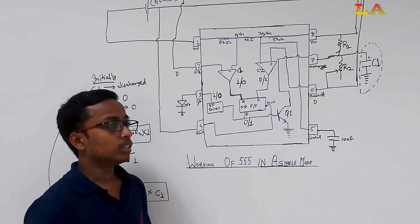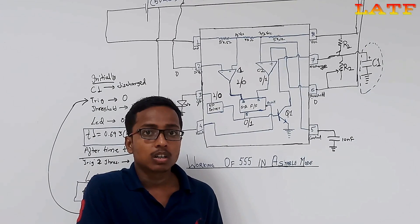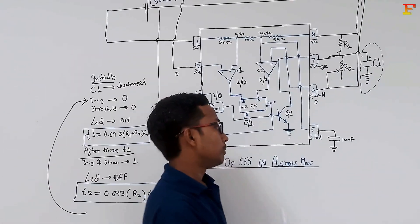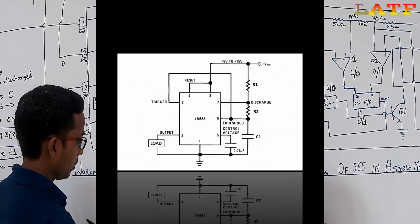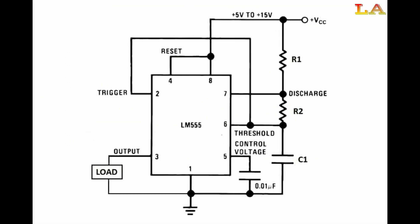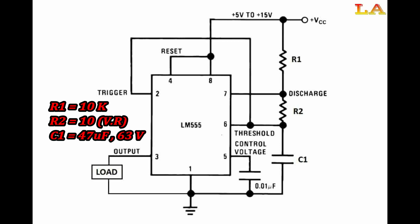Now, let us see the practical demonstration of 555 in astable mode. This is the circuit diagram of 555 in astable multivibrator mode. Here, R1 is equal to 10 kOhm, R2 is variable resistor of 10 kOhm, capacitor C1 is 47 microfarad 63 volt.